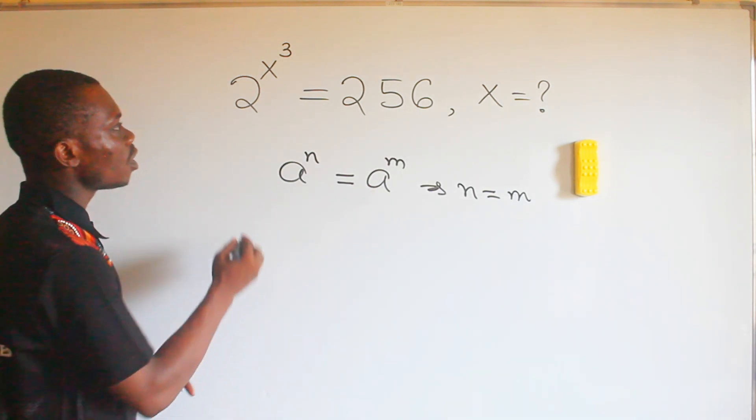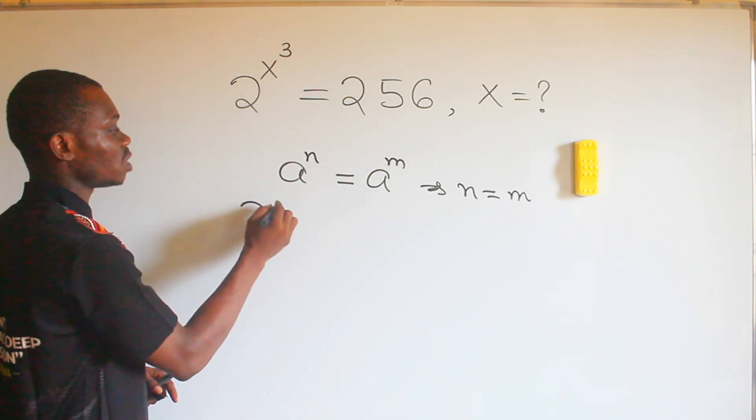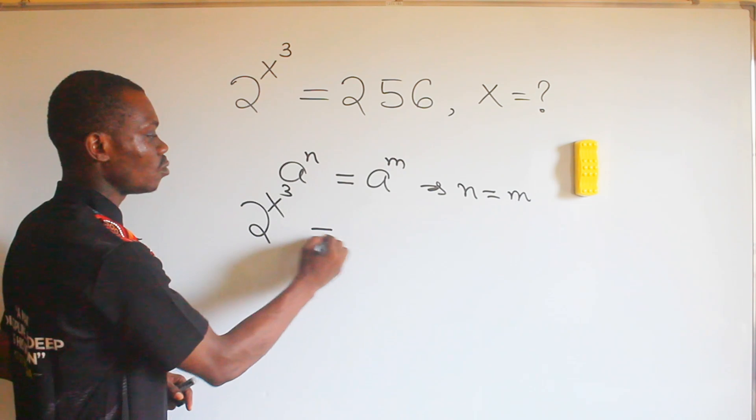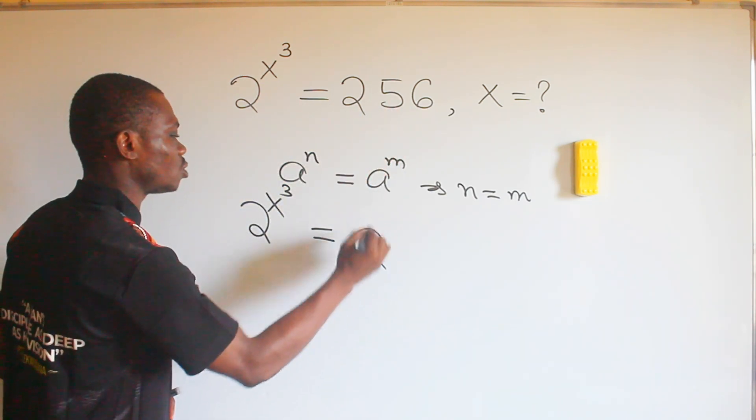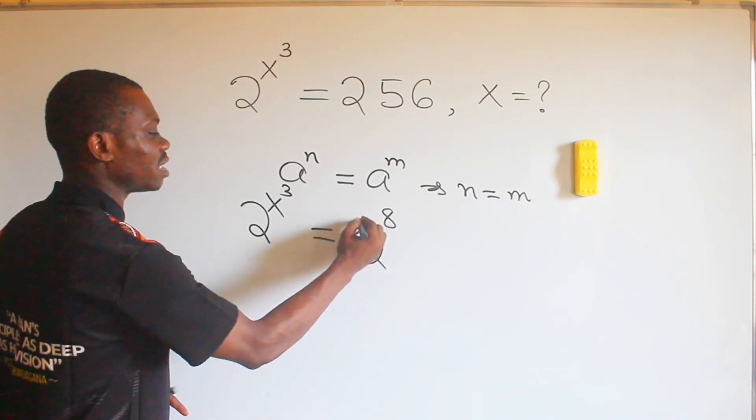Okay, so by implication I will try to make this to be in base 2. So that will give me 2 raised to the power of x raised to the power of 3, which is equal to this in base 2, which is actually 2 raised to the power of 8.